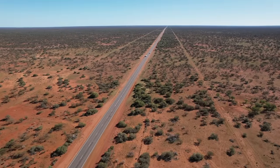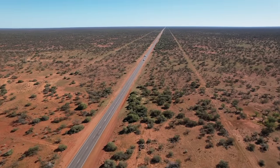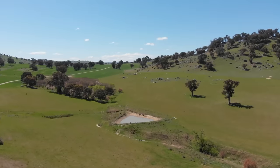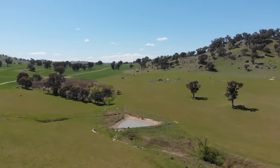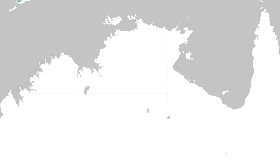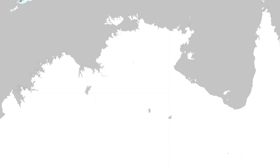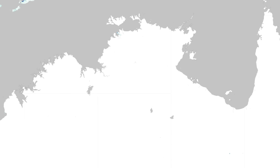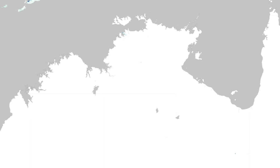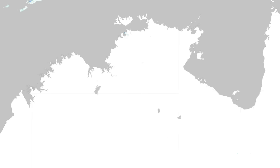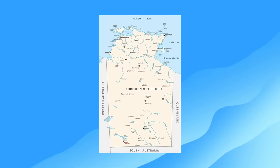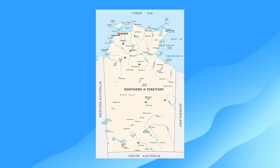Australia is one of the most sparsely populated countries on Earth, at just 3.5 people per kilometre squared — in fact, the second or third least densely populated country on the planet. The Northern Territory is even more sparsely populated, at just 0.16 people per kilometre squared. This region stretches for around 1.4 million kilometres squared — larger than the entire country of Peru — yet has a population of only around a quarter of a million.